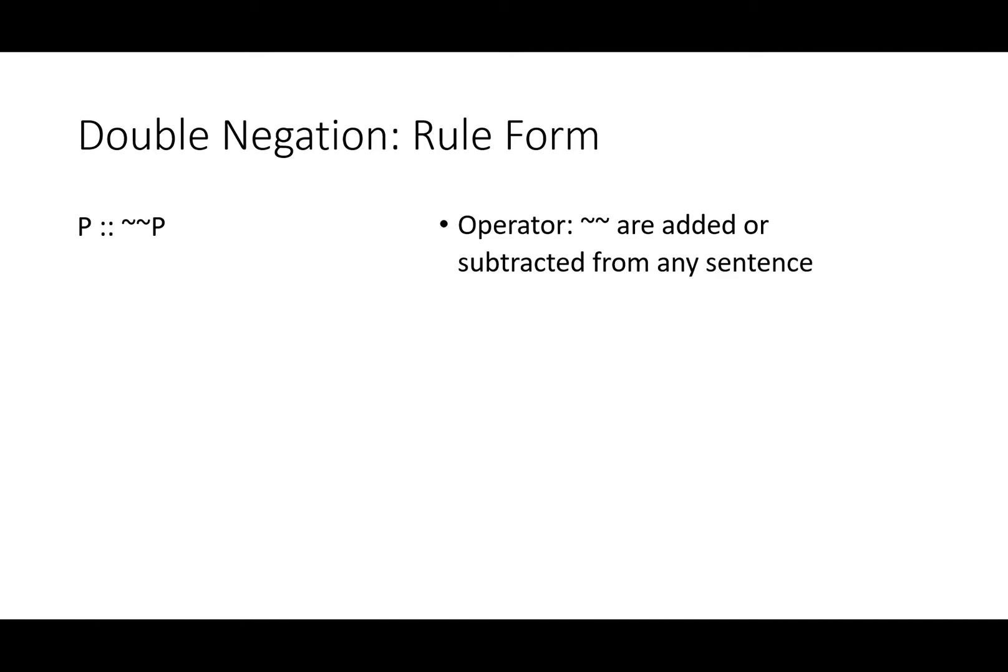With this rule, we're not dealing with a main operator every time, though it might be. You are simply adding or subtracting two negation signs. As a rule of replacement, this applies in both directions to any whole line or partial line.